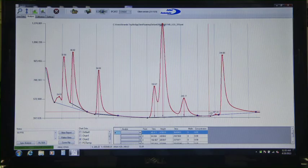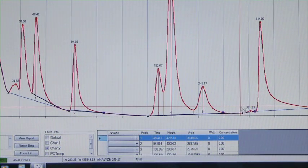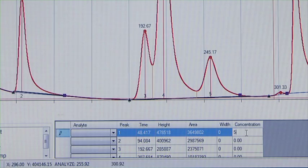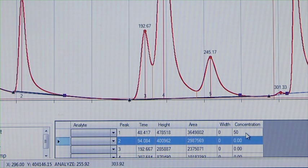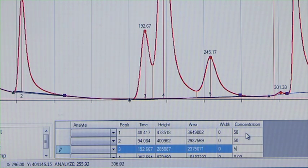After the peaks have been integrated, the analyte data grid displays the integration results. Enter the known concentration for the calibration standard into the data grid.